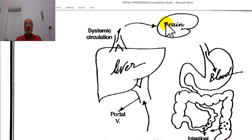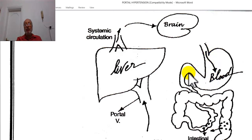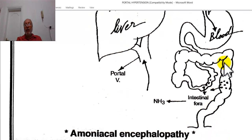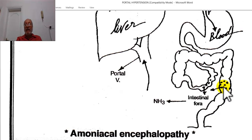To prevent this mechanism: first, insert a Ryle's tube with continuous suction to prevent propagation of blood downward to the intestine. Wash the colon by repeated enema to avoid the presence of blood with the bacterial flora. Give neomycin 500 mg every four hours to reduce the intestinal flora.